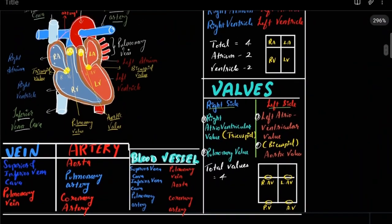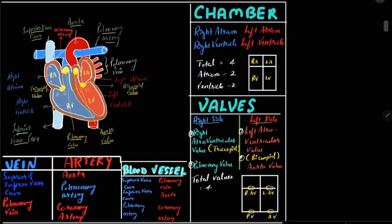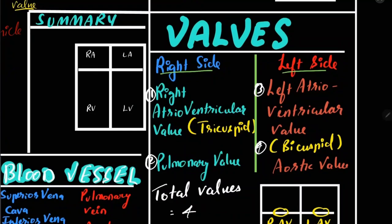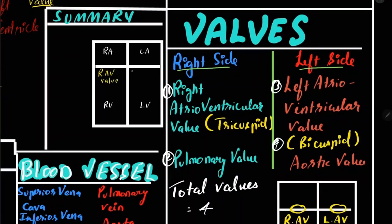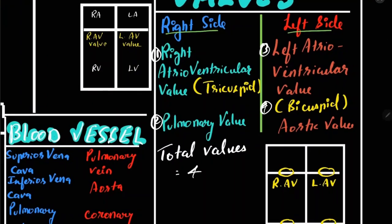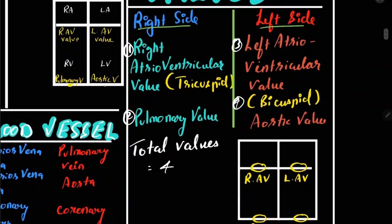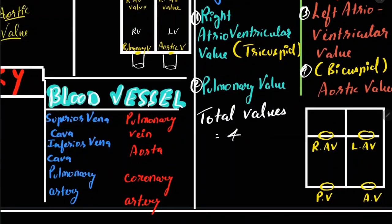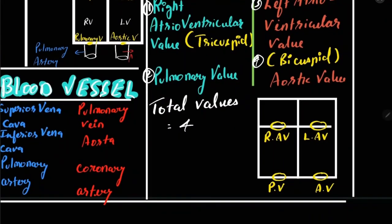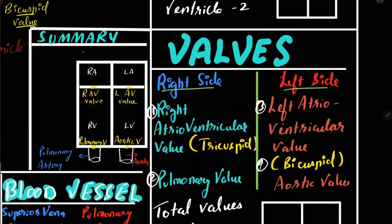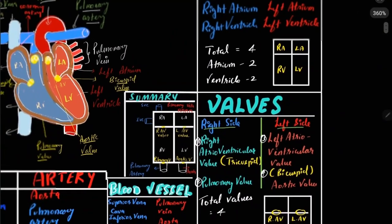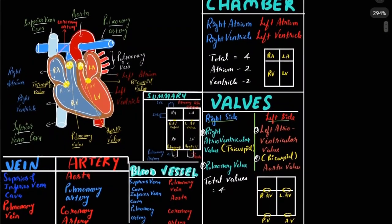With the help of a box diagram we can summarize the anatomical structures of the heart. The heart has four chambers; between atria and ventricles are the atrioventricular valves; between ventricles and blood vessels are the pulmonary valve and aortic valve respectively. The right ventricle supplies blood to the pulmonary artery and the left ventricle supplies blood to the aorta. Blood enters the right atrium through the superior and inferior vena cava, and blood comes from the lungs into the left atrium through the pulmonary veins. In the next video we will see the physiology of the heart and blood flow.